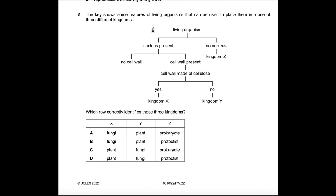Question 2: The key shows features of living organisms used to place them into one of three different kingdoms. Plants have a cell wall made of cellulose, so we're choosing between C and D. A cell wall present but not made of cellulose describes fungi. Kingdom Z has no nucleus at all — that's the prokaryote kingdom. So the answer is C. Protoctists have both animal and plant cell characteristics, both containing a nucleus.